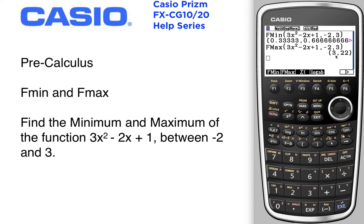At a value of 3 it gives me a value of 22. At a value of 0.333 my function minimum was given as 0.666.